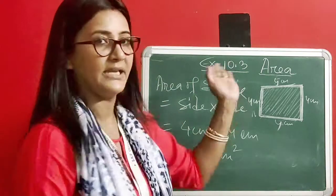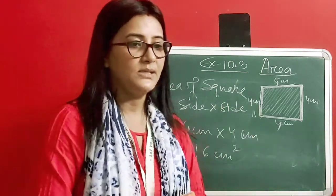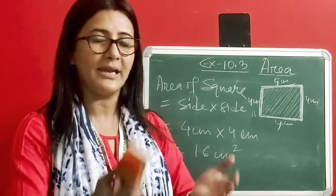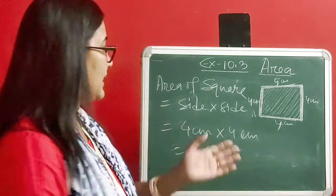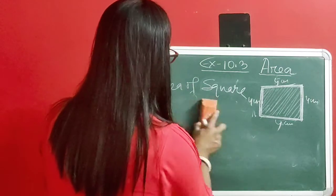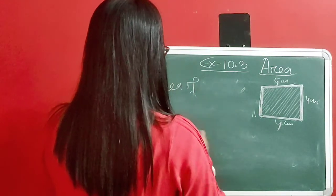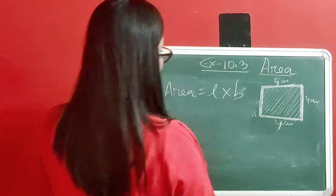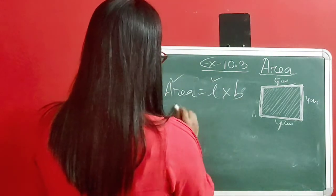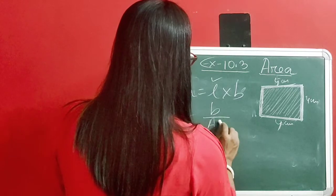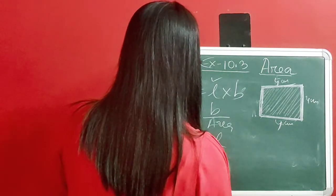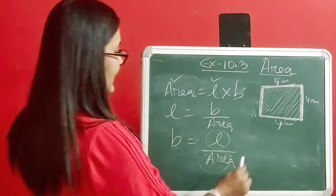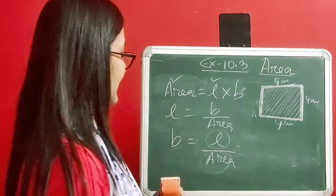Now, in some questions, the area may be given and you need to find a missing dimension. For a rectangle, if area is given and length is given, then breadth equals area divided by length. Just put in the value of length and the value of area, and find out the breadth.